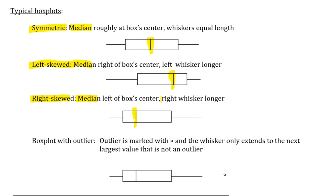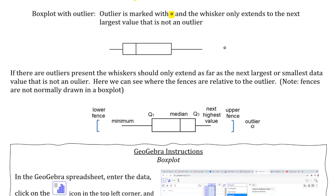If there are outliers present, the whiskers should only extend as far as the next largest or smallest data value that is not an outlier, as represented in the previous situation. Here also, we see where fences are relative to the outlier, represented with these blue brackets. And again, note that fences are not normally drawn. We have the minimum Q1, the median, and Q3 are all within the fences, so nothing needs to be adjusted. But we see an outlier on the high end, which would have been our original maximum. Therefore, we have to use the next highest value as our upper whisker.